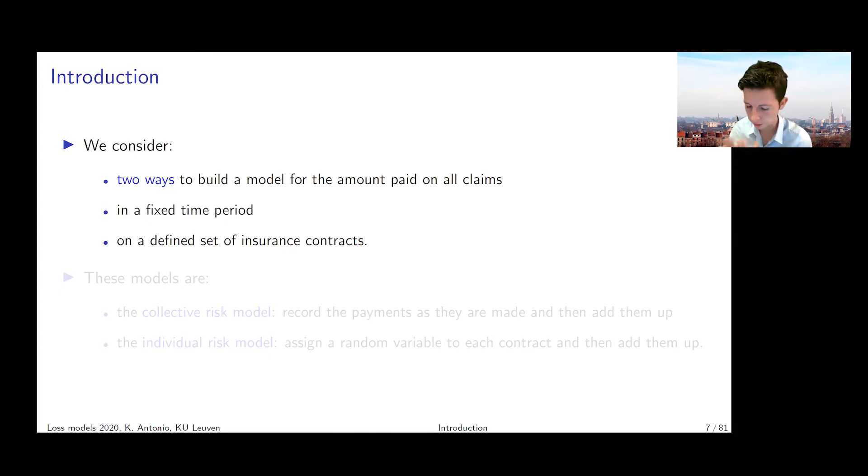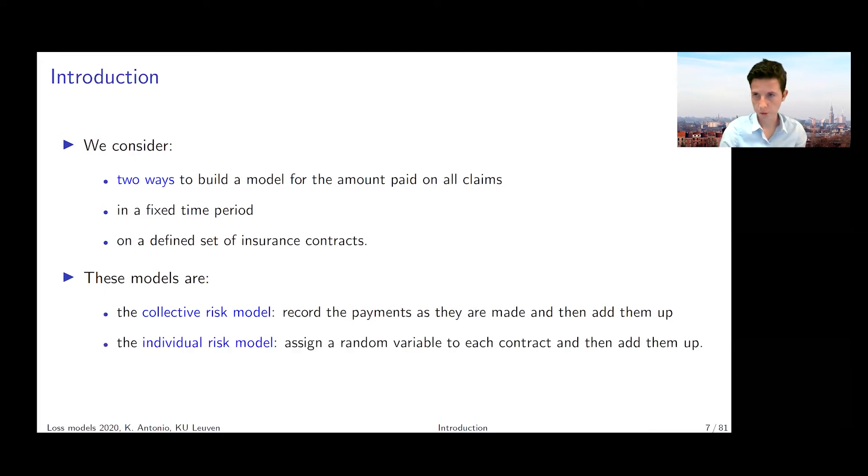If you look at the actuarial literature, two famous models to do this have been introduced. We're going to meet them in this chapter: the collective risk model on the one hand and the individual risk model on the other hand. The main difference between these two is that in the collective risk model you're going to focus on recording the payments.